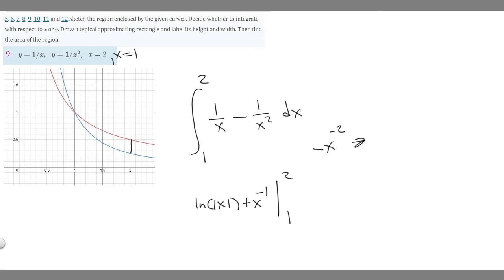So all we've got to do is just plug them in. So we're going to plug in 2, get a value, and then subtract whatever 1 plugged in is. So if we plug in 2, we'll have the ln of the absolute value of 2 plus 2 to the minus 1. So the natural log of 2 is just ln of 2. So natural log of 2 and then 2 to the minus 1 is the same thing as 1 over 2 to the 1, which is just 1 over 2, which is 1 half. So ln of 2 plus 1 half.